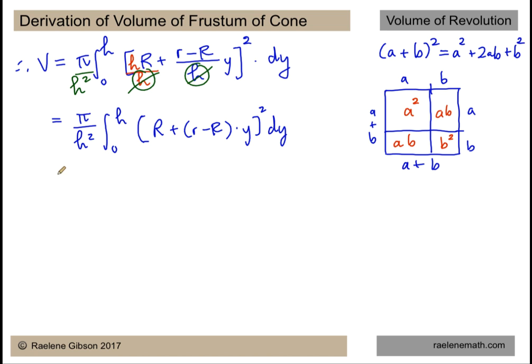So that's what we're going to apply here in one step to get π over h² times the integral from zero to h: square the first, multiply together and double. So if I square the first term it's going to be R²h². So we get R²h² plus 2Rh(r-R)y plus (r-R)² times y², and all of that quantity times dy.